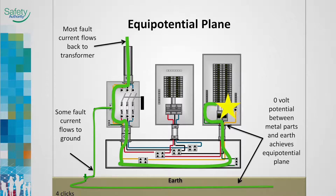A shock hazard is created when there is a voltage potential between two points. When equipment fails and a fault occurs, the metal parts of the equipment carry the fault back to the power supply neutral. As this fault current flows, there is a voltage rise across the metal electrical equipment. Good effective bonding provides a low impedance path which results in a low voltage rise, reduced risk of electrical shock, and faster operation of the fuse or circuit breaker and less equipment damage.